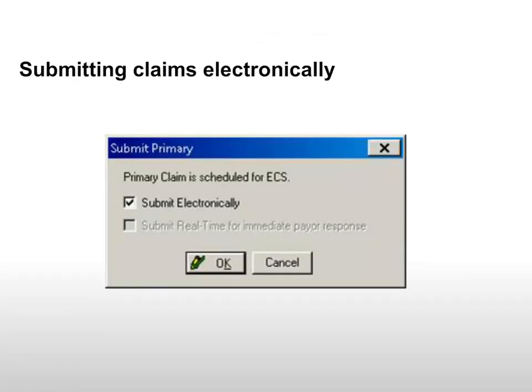Submitting Claims Electronically. When you submit a claim, the Submit Primary window is displayed, prompting you to submit the claim electronically. Click OK. The claim is sent to the ECS batch file to be transmitted later. Continue adding claims to the batch. Secondary claims and preauthorizations default to print because they usually require an attachment. Electronic attachments can be sent by subscribing to NEA Fast Attach.